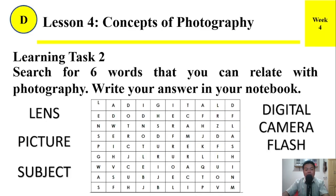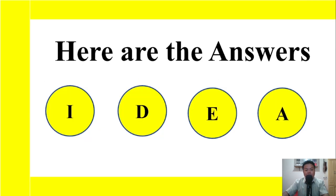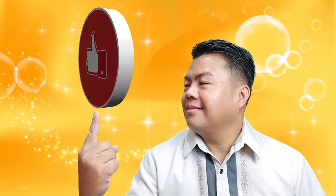Learning Task Number Two: Search for six words that you can relate with photography. Write your answer in your notebook. The words are: lens, picture, subject, digital, camera, and flash. Here are the answers — don't forget to subscribe, like, hit that notification bell, and write your comment in the comment section below.